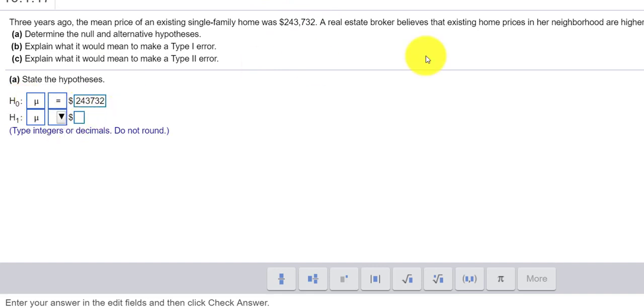The alternative would be that it says existing home prices are higher or greater than. So we're going to use the greater symbol. If we said less than, we would have had the inequality pointing to the left, but greater, we're assuming that the mean is greater than $243,732. Check our answer.